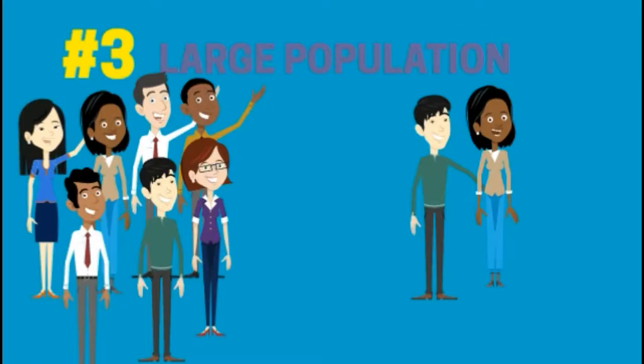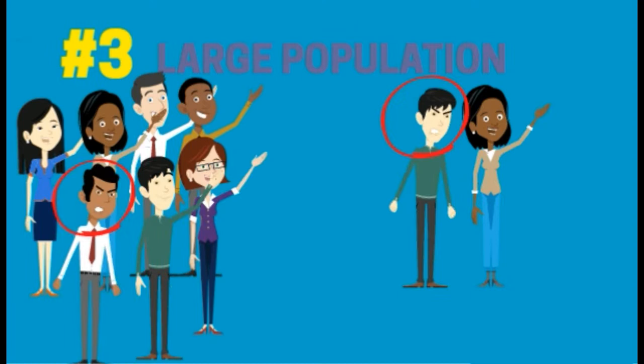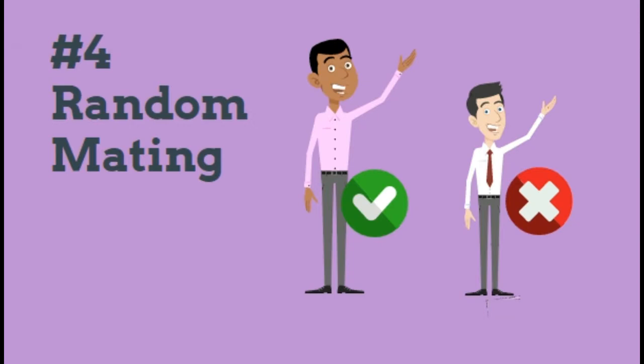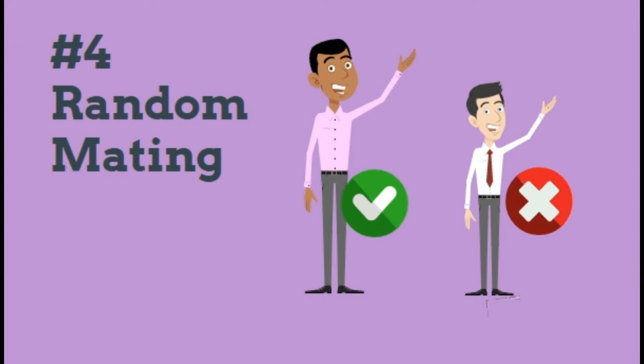Next, no genetic drift, which means a large population. The larger the population, the less of an impact if a different factor is modified. Next, random mating — random mating prevents sexual selection, which is when organisms with certain traits are more likely to get chosen by a mate than individuals without those traits.